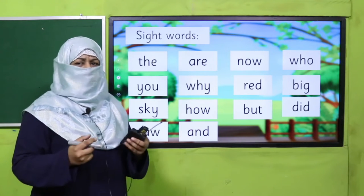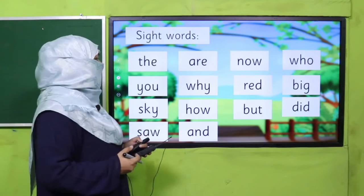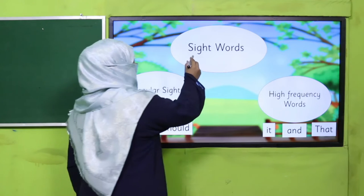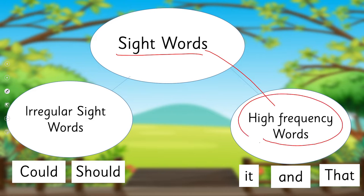You read so quickly! Am I right? So basically, sight words are of two types. One is high-frequency words, because they appear so often you can read them quickly — 'it,' 'and,' 'that' — right?